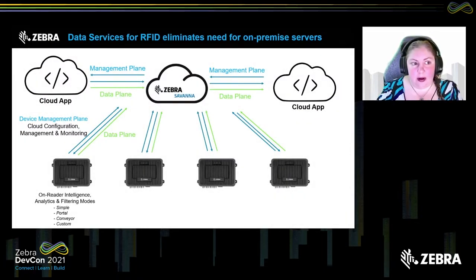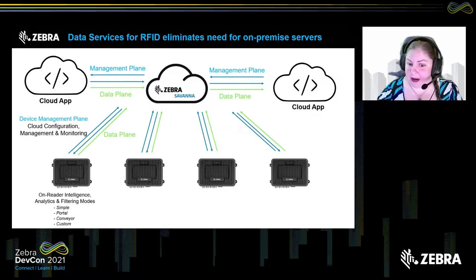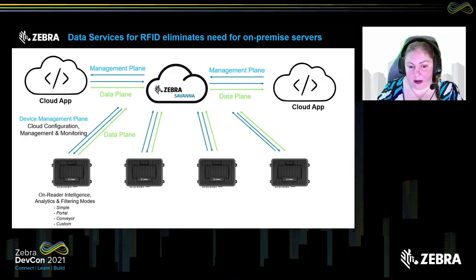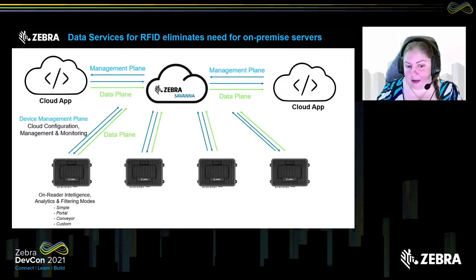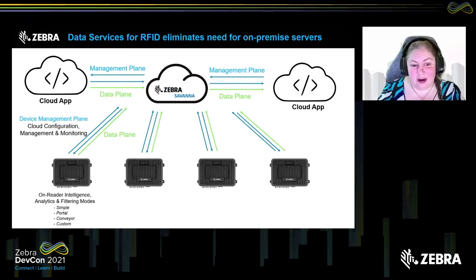As an overview, the RFID data services work by having the readers connect to Zebra Savannah cloud pretty much directly. You don't have to have any on-premise hardware, servers, software, or gateways hooked up at local sites in order to connect these readers to Zebra Savannah cloud. It works through standard HTTPS protocols — the only port you need open is 443, and the readers will connect up to Savannah.